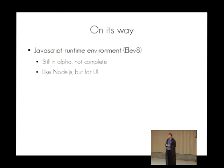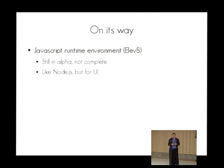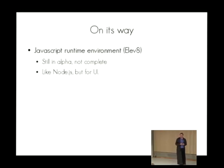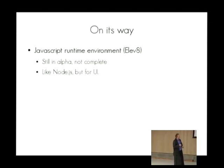Something of real interest already in SVN is something called Elev8. Elev8 is a JavaScript runtime — you can think of it a bit like QML, or a cross between Python and the EFL Python bindings. It allows you to write applications in JavaScript. You declare the user interface in JSON at the beginning of a JavaScript file and say 'create my interface out of that' and it works. It's quite easy to use, but it's still a bit immature.